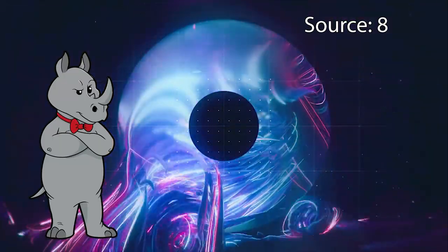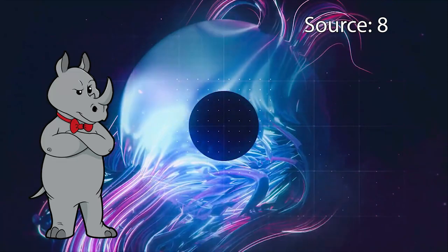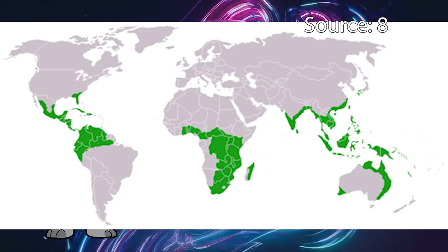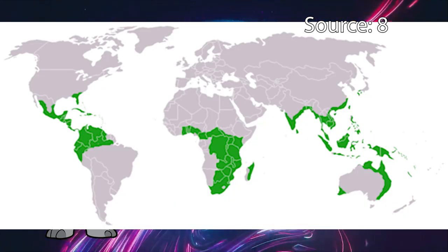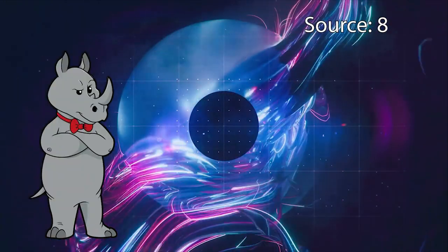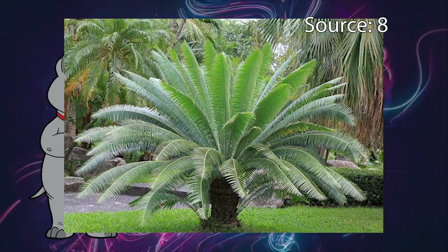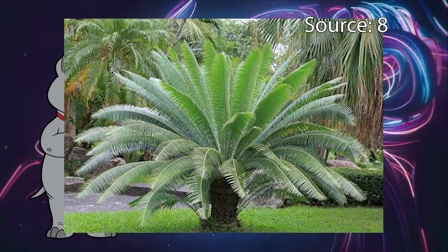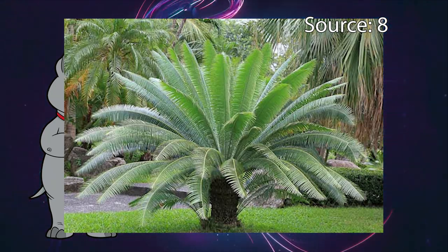For instance, cycad plants are a classification of plant that has a wide distribution across tropical and temperate environments, both today and in the fossil record. They're actually more abundant in the fossils than they are today. They look kind of like a cross between a fern and a palm tree, but they are not really closely related to either.